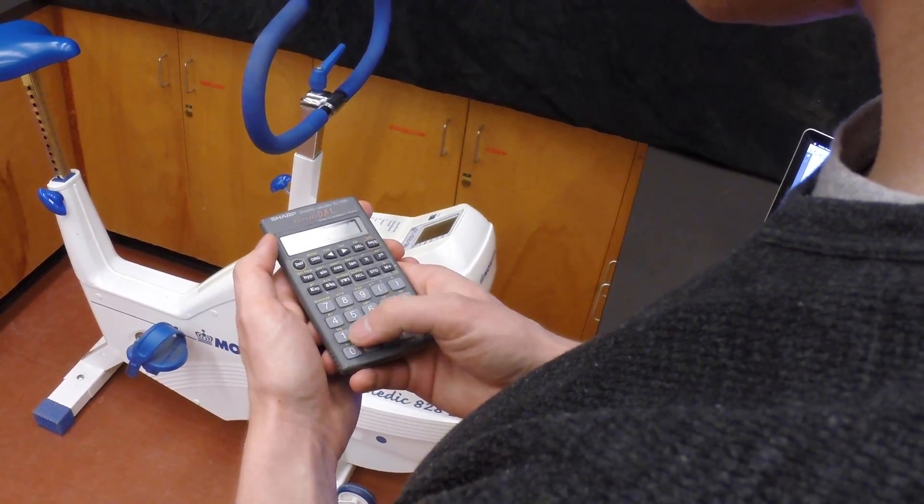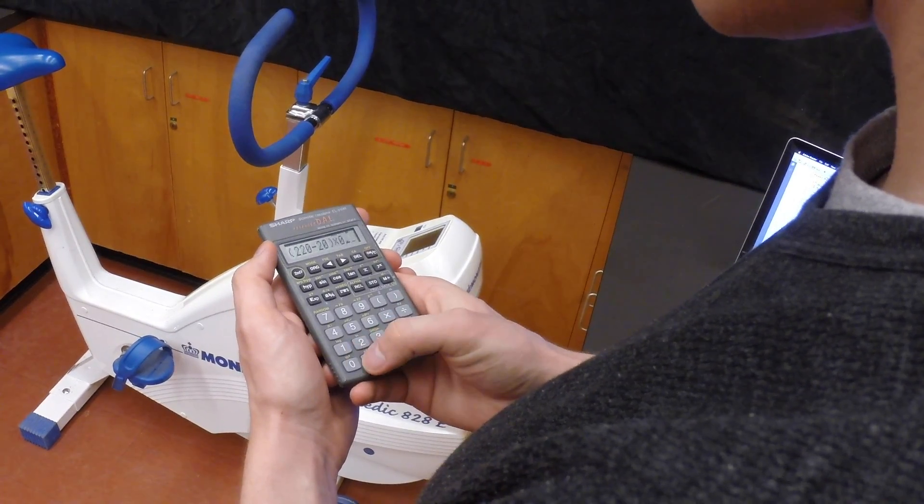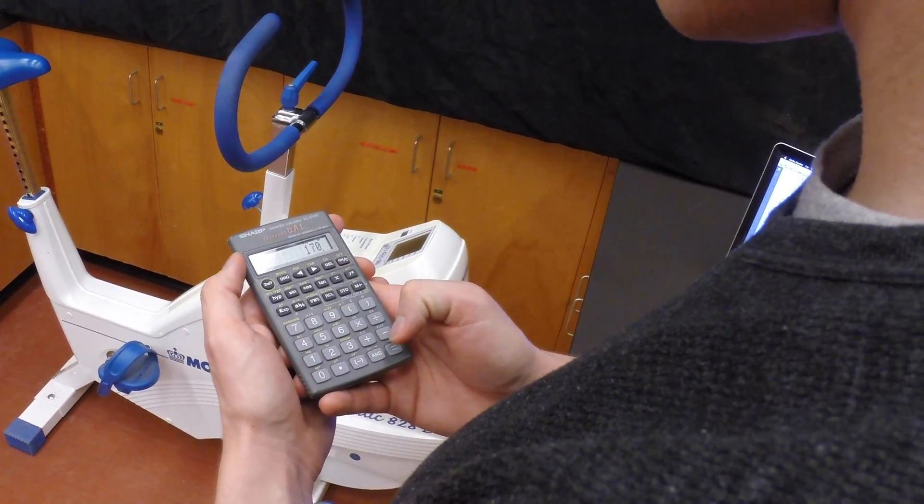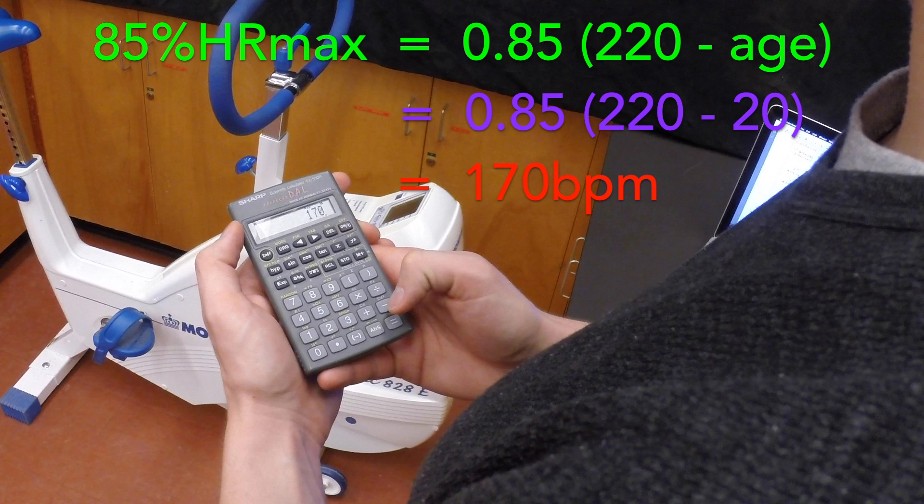Now let's figure out at what heart rate we will stop the test. Calculate 85% of the client's heart rate max. Here we determine that 85% of the client's heart rate max was 170 beats per minute.